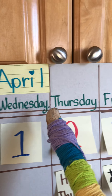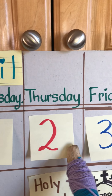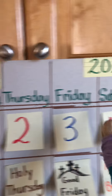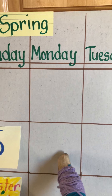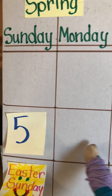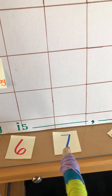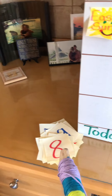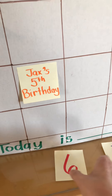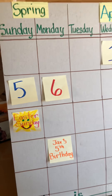Now let's count to find out what number it is. One, two, three, four, five. Five — what comes next? What comes after five? It's the number six. You can make the number six — I think you can.